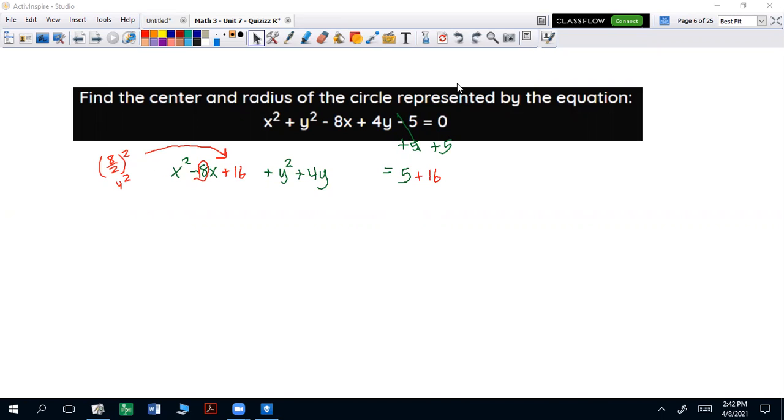Do the same thing for the 1 and the y. Take that 4, divide by 2. That's 2. 2 squared is 4. I'm going to add that there, and add it there. So the first thing is you want to do that to both sides, because whatever happens to one side happens to the other.